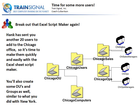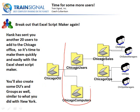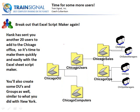Hank has sent you another 20 users to be added to that Chicago office we're establishing here. Once we have those users, we're going to create this OU structure. We're going to start with the Chicago OU, and we're going to be doing this on the NA domain — na.globamantics.com. Inside the Chicago OU, we'll create Chicago Users and Chicago Computers. We do that to keep group policy for users and computers separate, making our lives a little easier.